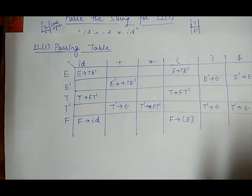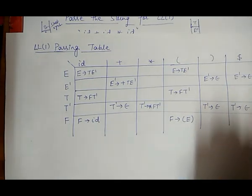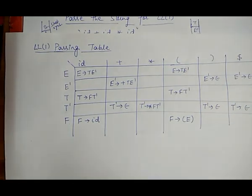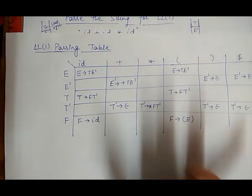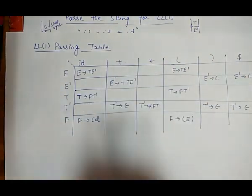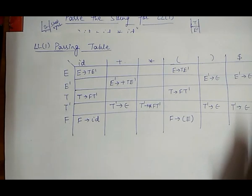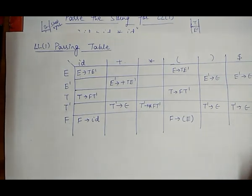This is how we solve the problem of predictive LL1 parsing. First, we compute the FIRST and FOLLOW functions (also called leading and trailing functions), then with those we create the parsing table, and with the parsing table we check whether a particular string is acceptable for that grammar. I hope you have no doubts, but if you do, ask in the comment section. If you like the video, please subscribe to our channel and share it. Thanks for watching.